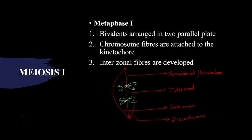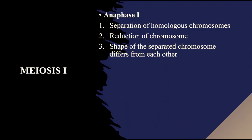Now let's enter into anaphase 1. Here there will be the separation of homologous chromosomes. The homologous chromosomes break their connection and separate out. This process is called disjunction.